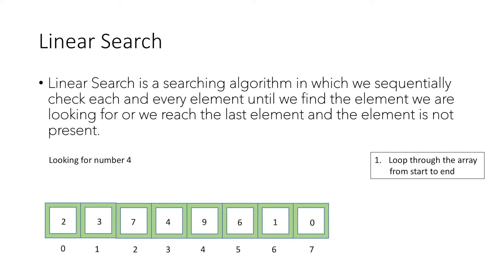We will loop through the array from start to end and check the value of every element whether it is equal to the element we are looking for. If we find that element, we will return the index of that element.